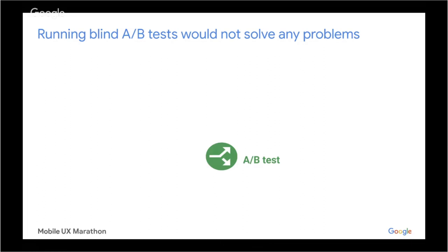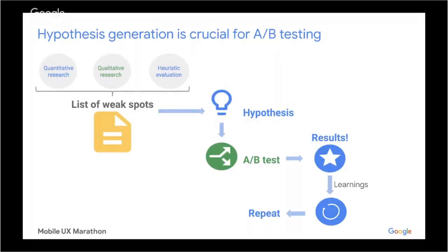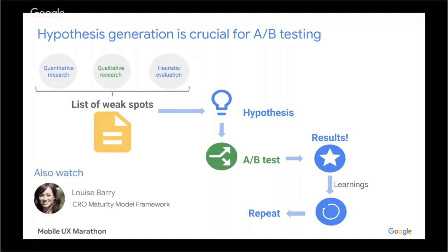A/B testing is part of a huge loop. In order to run a successful A/B test, we should be making our hypothesis first. To extract this hypothesis, there are different means — we can get quantitative or qualitative research, or we can have heuristic evaluations. I won't deep dive on this topic here, but I strongly recommend you check my colleague Louis Berry's webinar on the serial maturity model framework, where she deep dives on these different research methods.